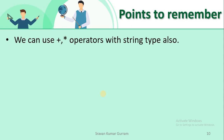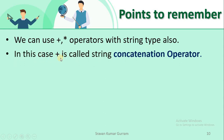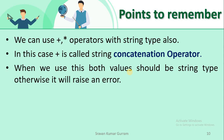Now, some important points about the plus and star operators — these two can also be used with the string data type. When the plus operator is used with strings, it is called the string concatenation operator. When working with string data types and using the plus symbol, it must be called the string concatenation operator. The rule is that both values must be string type; otherwise you will get an error.